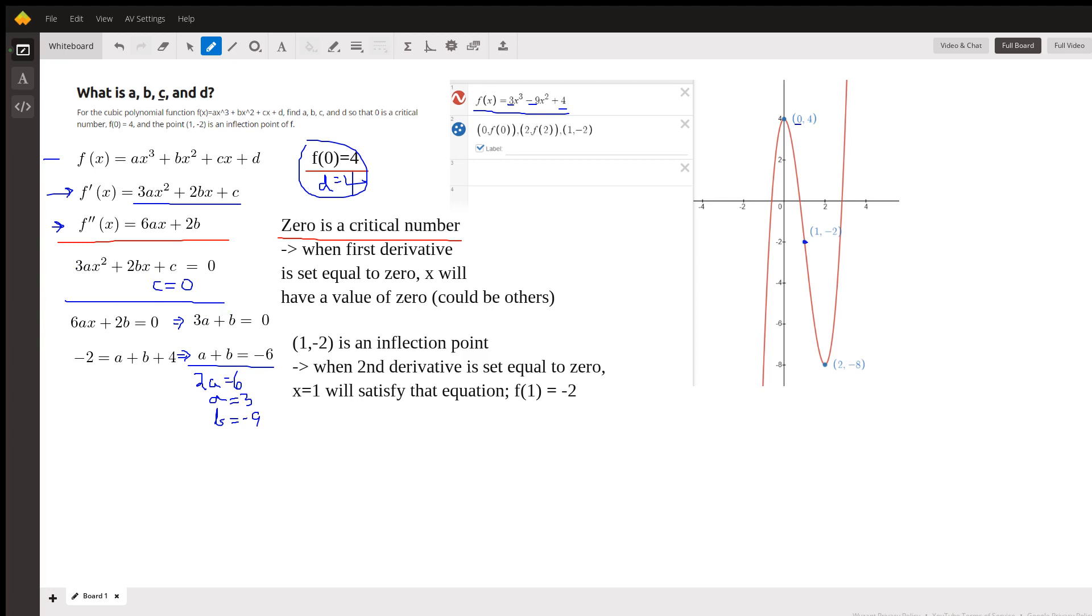And if (1, -2) is an inflection point, that implies when the second derivative is equal to 0, x will equal 1 if you solve that. And if (1, -2) is an inflection point, then f(1) must equal -2. It has to lie on the curve.